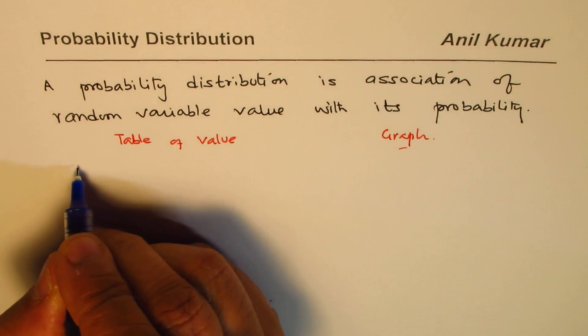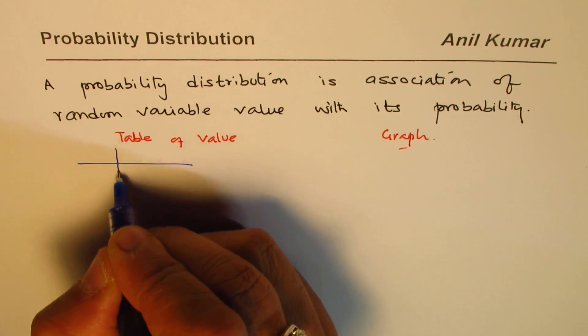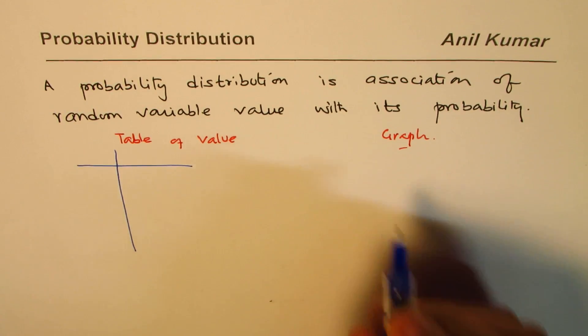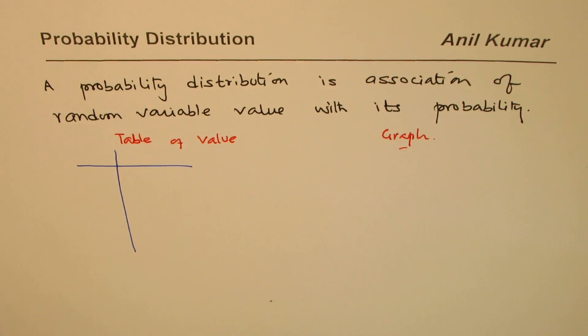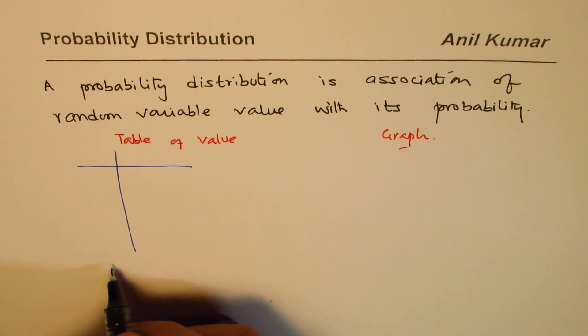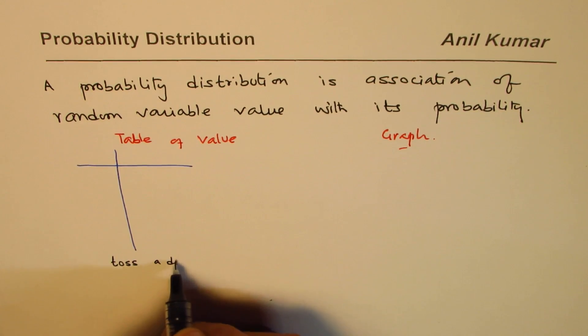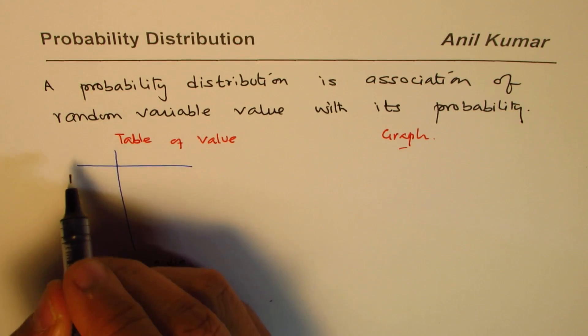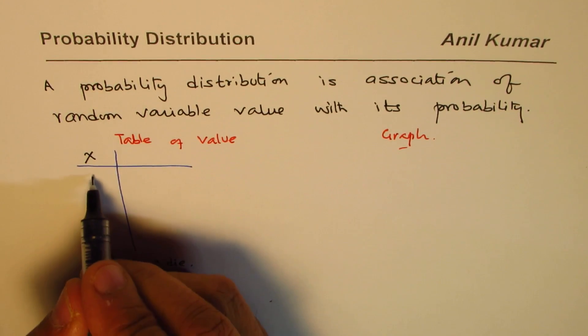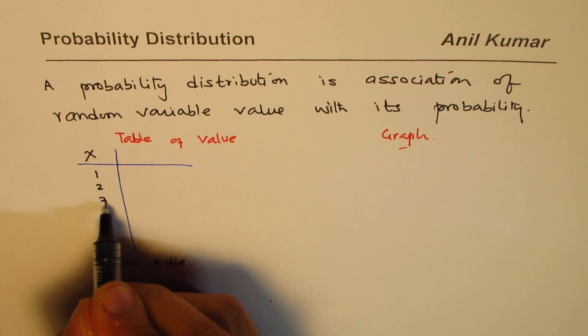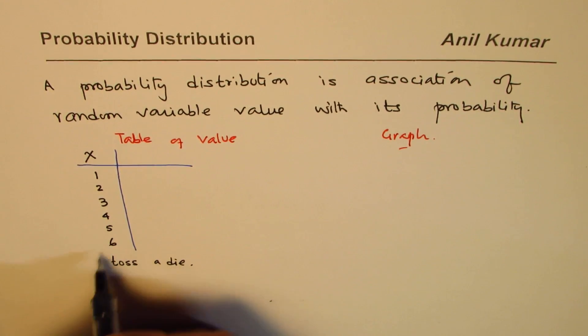In table of values we can have different values for the random variable. Let us say we take an example of tossing a die. In that case the random variable could be the number which you get on the top. For example, it is like 1, 2, 3, 4, 5 or 6.